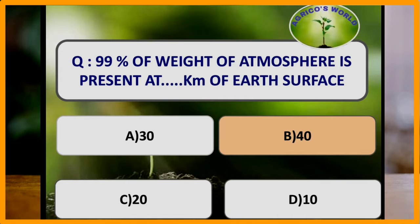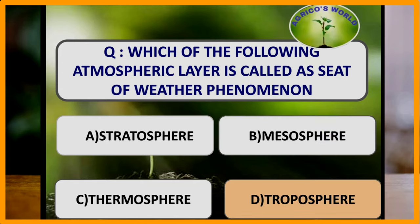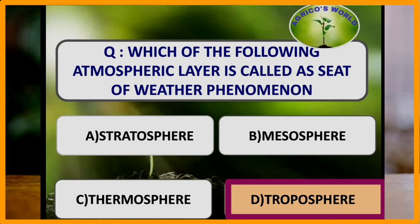99% of the weight of the atmosphere is present at how many kilometers from the earth's surface? 99% of the weight of earth's atmosphere is present at 40 kilometers from the earth's surface. Which atmospheric layer is called the seat of weather phenomenon? Troposphere is the layer called the seat of weather phenomenon. It is the first layer, located at 8 to 18 kilometers from the earth's surface. All weather phenomena like clouds, rainfall, and mostly 75% of gases occur in this layer.